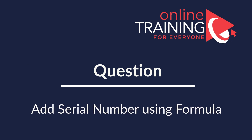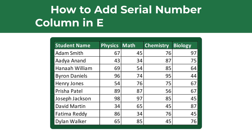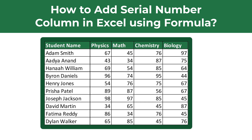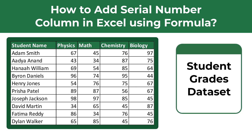Here is an interesting question you frequently see on the test. You're presented with a set of data and need to add a serial number column using an Excel formula. In our case, we're presented with student grades information, and for each student we need to add a serial number. Do you know how to do it?